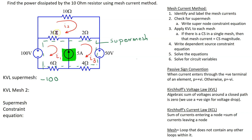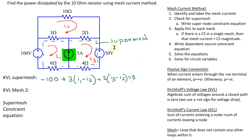Since we are applying KVL to the super mesh, we give priority to the super mesh current. So the voltage drop across the 3-ohm resistor is written as i1 minus i2. Next we have the 2-ohm resistor, which has currents i3 and i2 flowing in opposite directions. We give priority to i3, writing this as 2(i3 minus i2). Next we arrive at the 50-volt source where i3 is entering the terminal marked plus and leaving the terminal marked minus, giving a voltage drop of plus 50 volts.